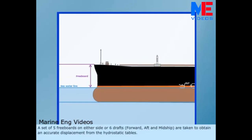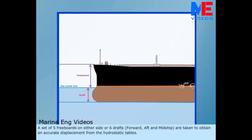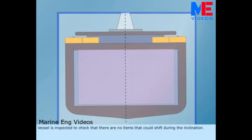A set of five freeboards on either side or six drafts forward, aft and midship are taken to obtain an accurate displacement from the hydrostatic tables. Vessel is inspected to check that there are no items that could shift during the inclination.